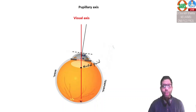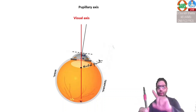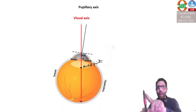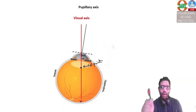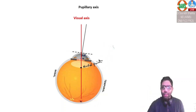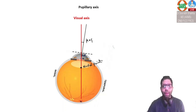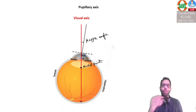If you are fixating at a pen with one eye, the light coming from the pen passes through the nodal point and goes to the fovea — that is the visual axis. So there is an angle formed between the pupillary axis and the visual axis. This angle is known as the kappa angle. The kappa angle is the angle between the pupillary axis and the visual axis.